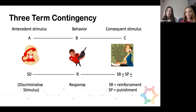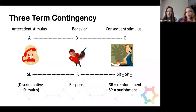The thing that comes before is either what we call the antecedent or the SD. Anything that happens after is some sort of consequence — a consequence that either reinforces the behavior or punishes the behavior. Stay tuned next time when we talk about the four-term contingency.